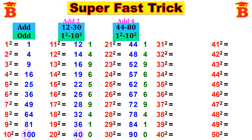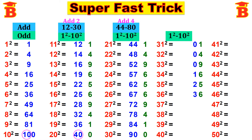Next let us find 31 squared to 40 squared. Here also the first step is the same: write 1 squared to 10 squared. That is 01, 04, 09, 16, 25, 36, 49, 64, 81, and 100.